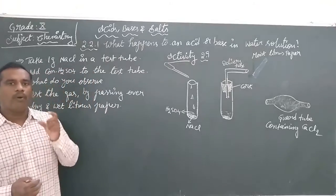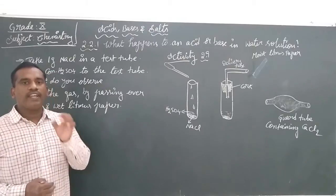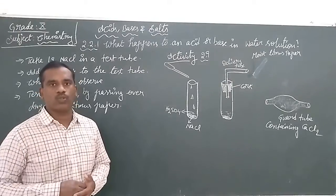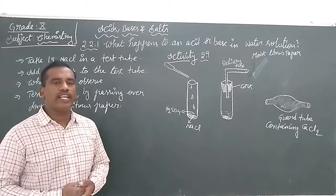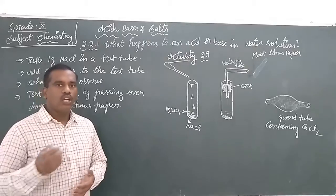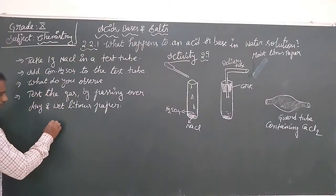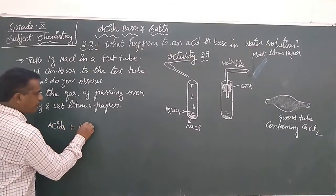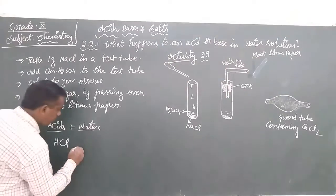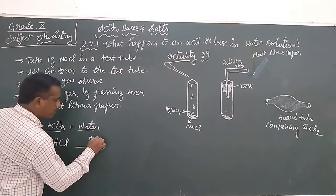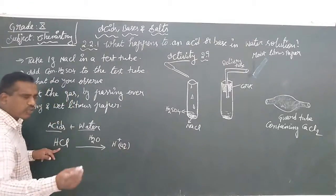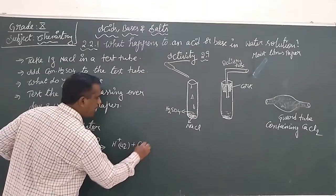For that we need to remember the main key concept. Whenever we have any acid dissolved in water, what ions does it produce? When acids are dissolved in water — take one example, HCl, hydrochloric acid. When dissolved in water, it will dissolve to give H⁺ ions and also Cl⁻ ions.